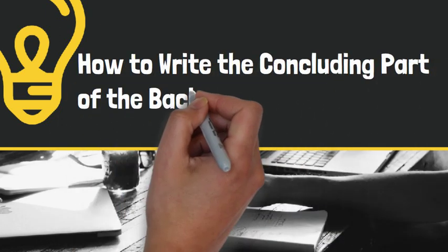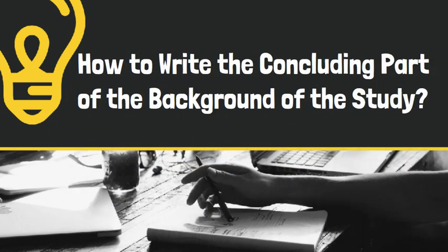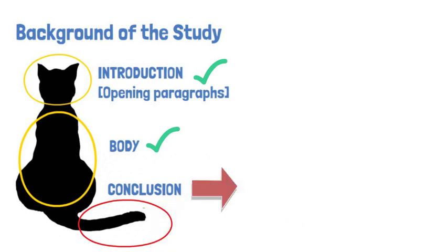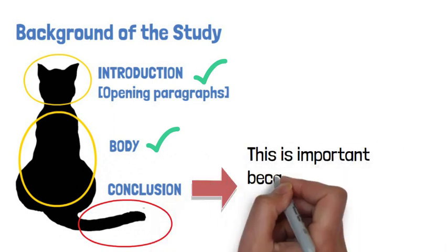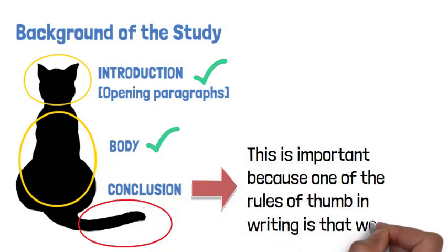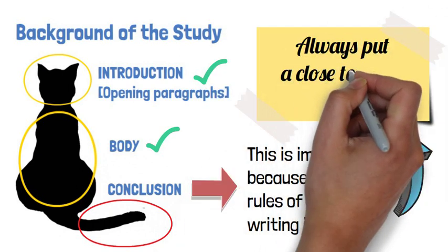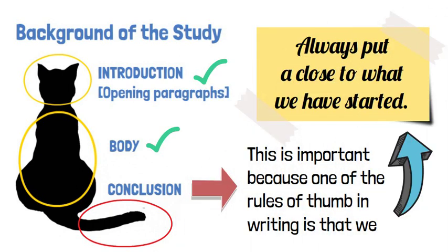How to write the concluding part of the background of the study. Since we have already completed the body of the background of the study in the previous lesson, we may now write the concluding paragraph, which is the tail of the cat. This is important because one of the rules of thumb in writing is that we always put a close to what we have started.